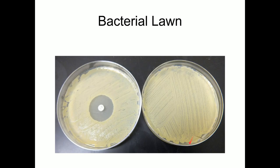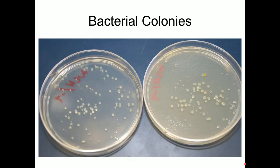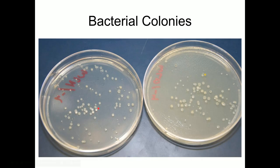In the next slide we look at bacterial colonies, which already look very different. The agar is clear, and the bacterial colonies are the whitish round circles on the plate — some on the left-hand plate and some on the right-hand plate. We see individual small circles that are distinguishable from one another.